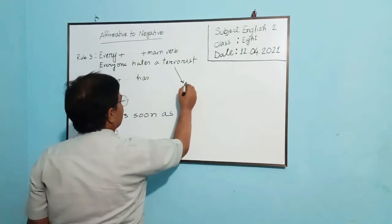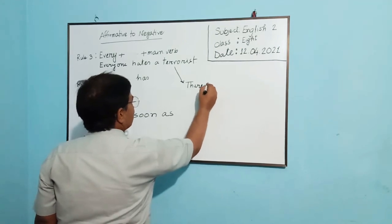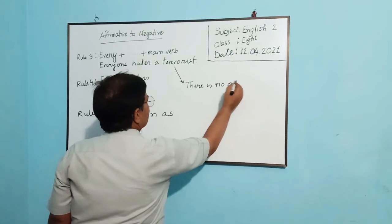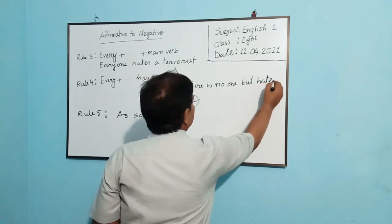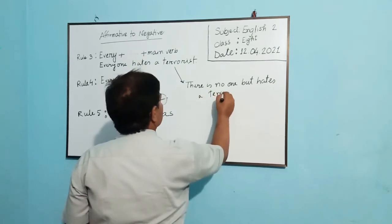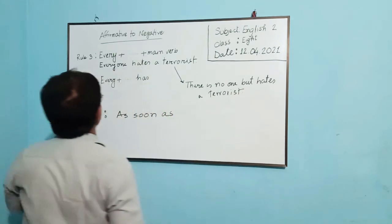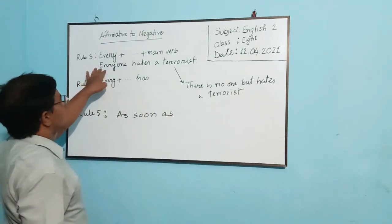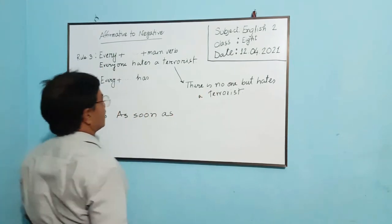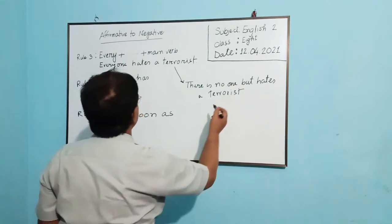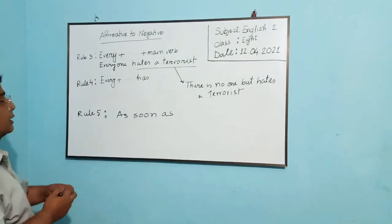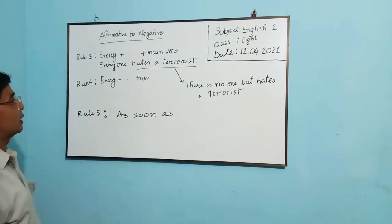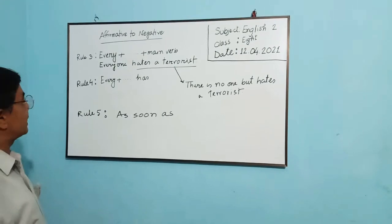The negative form will be: there is no one but is a terrorist. Okay, so you will just write, instead of everyone, there is no one, and then you will give a conjunction but, and then you should add all the rest of the sentence. Then it will be transformed in the negative form. So we can say everyone hates a terrorist. The answer will be there is no one but hates a terrorist.